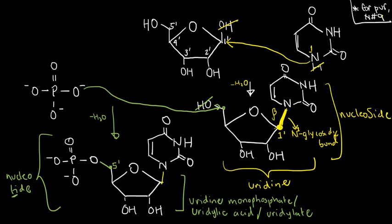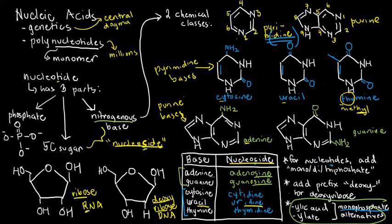It really depends on how much detail you want. For purines, by the way, the attachment point of ribose is nitrogen number 9, which is the nitrogen on the five-membered portion.